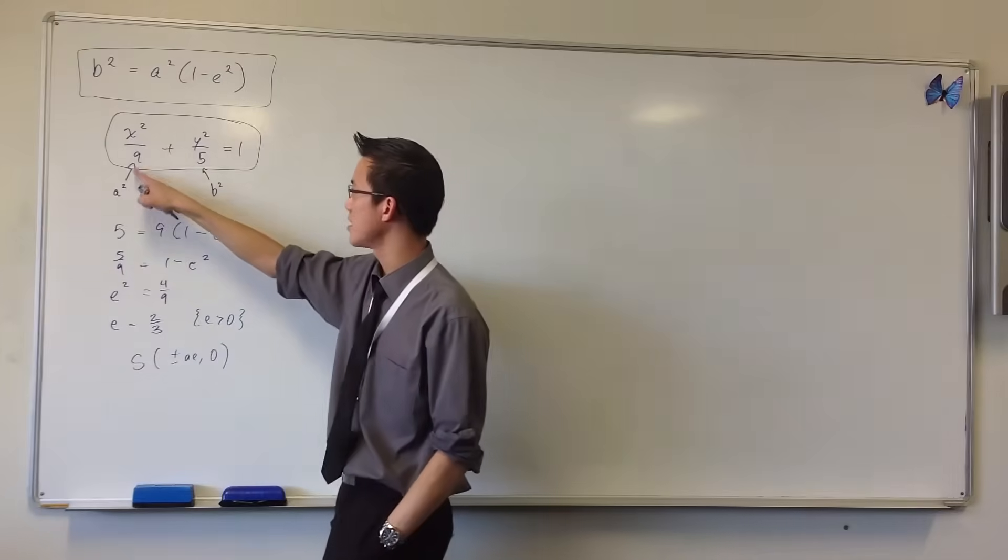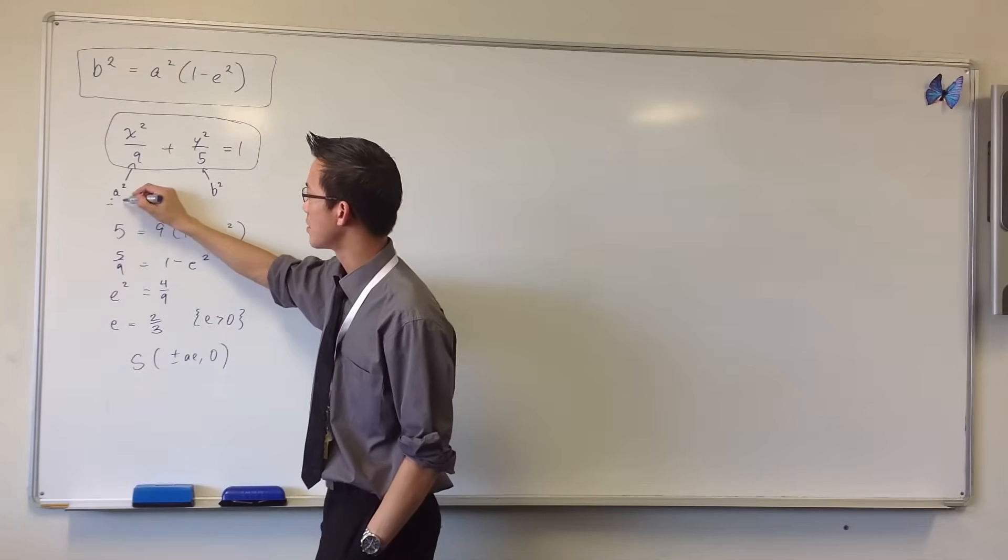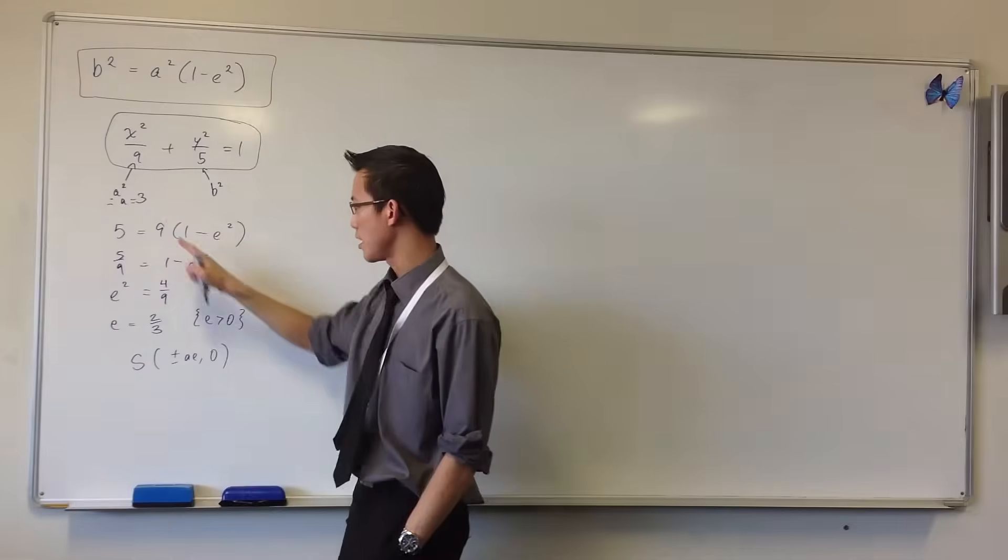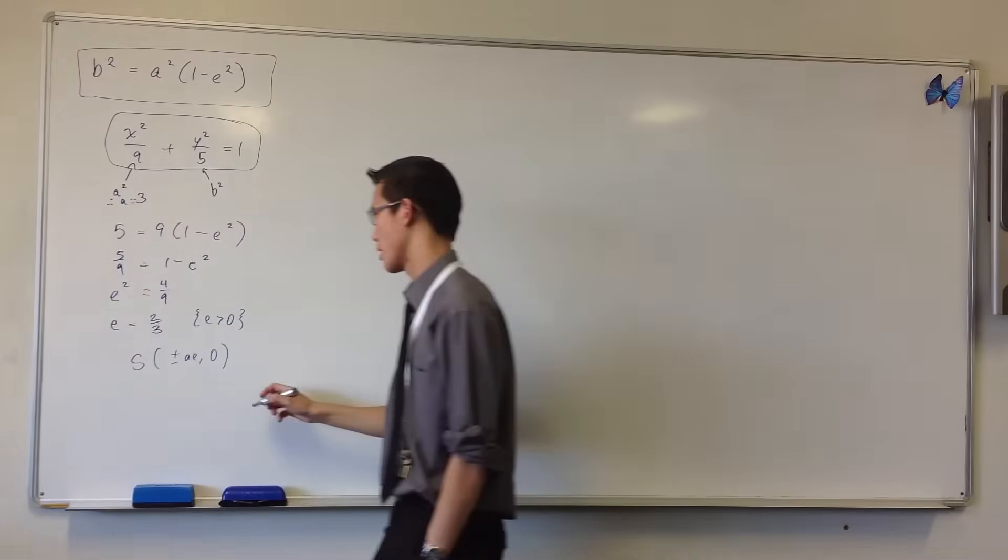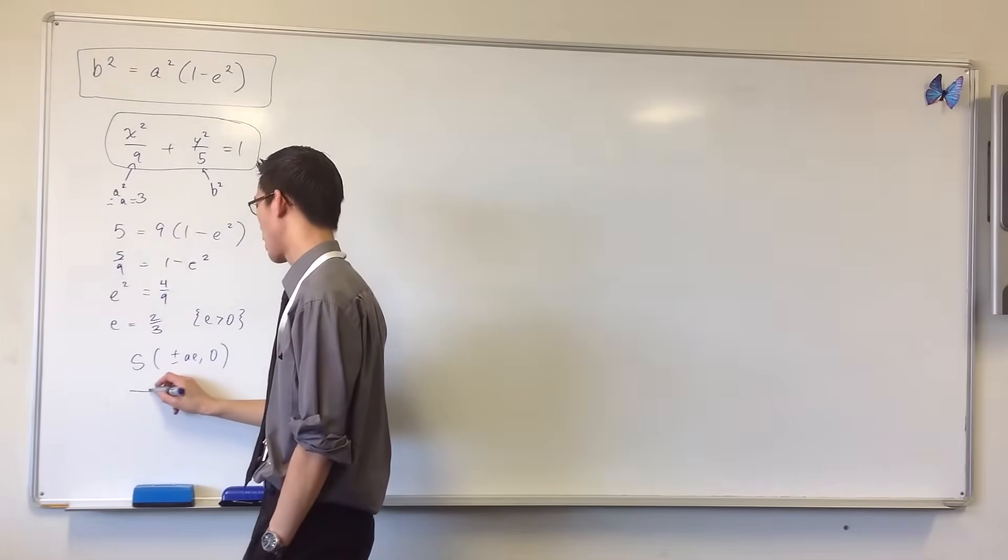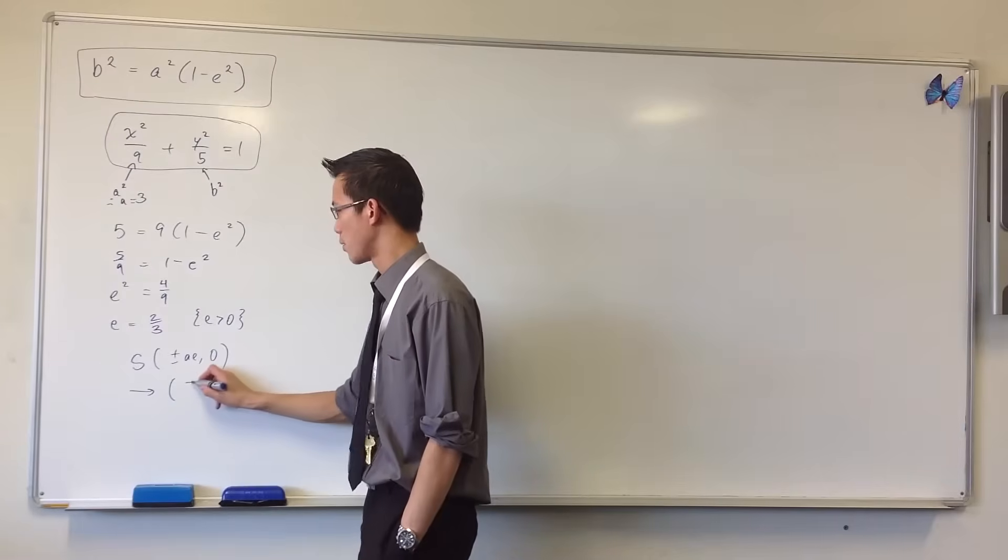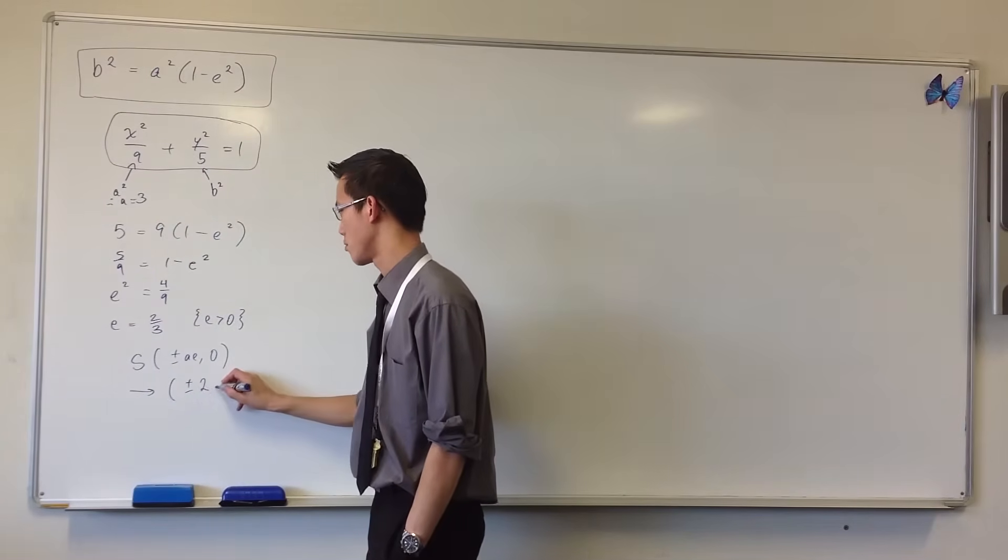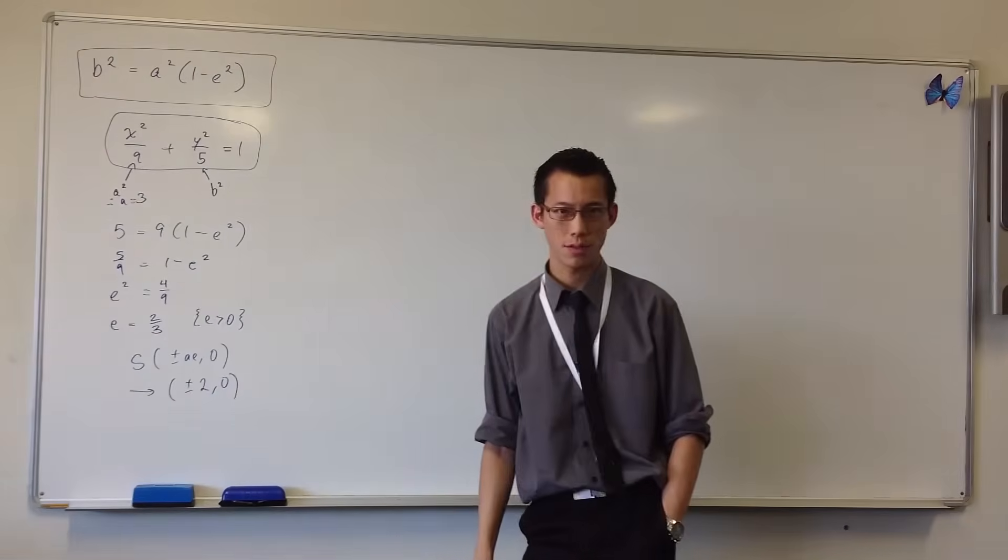So you're going to have two foci. Now a in this case, since that's a², that implies that a is three, and that's what I'm going to need along with the eccentricity to work out where the foci are. So here you're going to say plus or minus three times 2/3, that's just two. So there are the two foci.